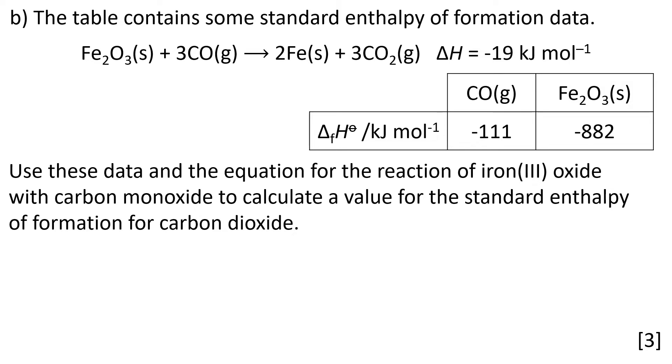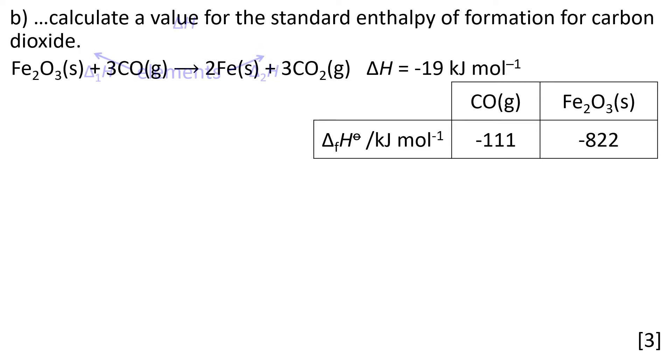From our previous question we know that we've got elements in their standard states. I don't need to balance that for the elements in this particular case. Those elements of iron and oxygen could be used to either make iron oxide and carbon monoxide with ΔH₁, or it can be used to make carbon dioxide and iron as ΔH₂.